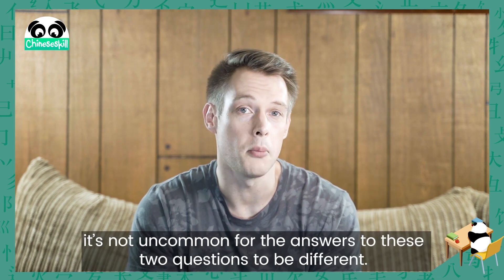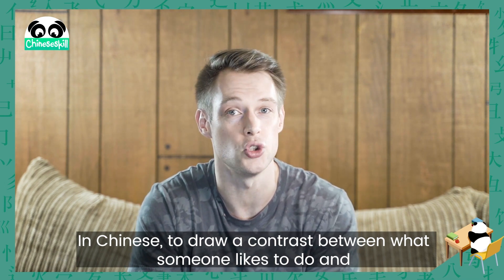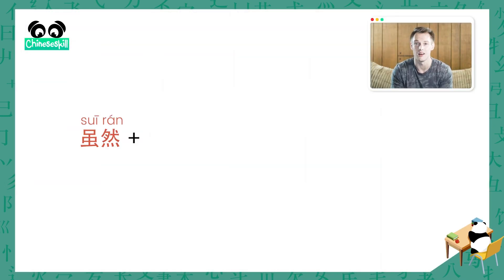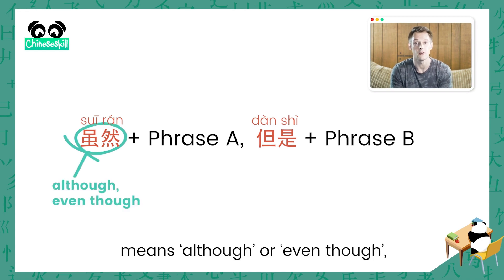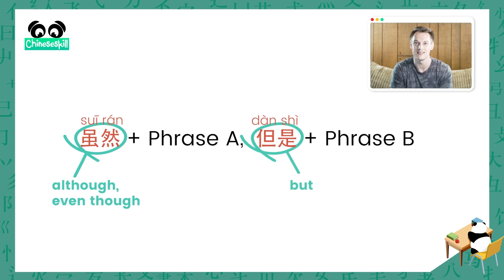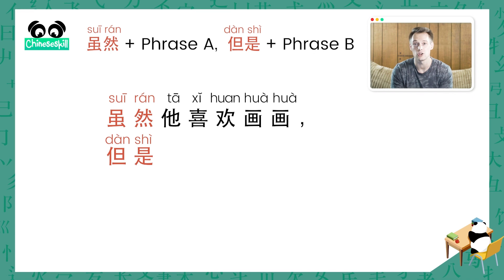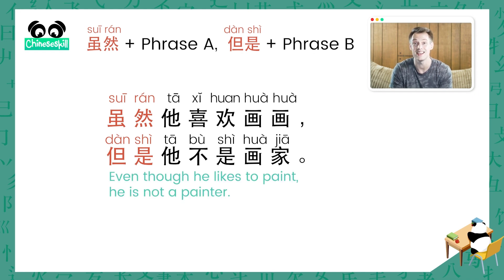For a lot of us, it's not uncommon for the answers to these two questions to be different. In Chinese, to draw a contrast between what someone likes to do and what someone does for work, we can use the following structure: 虽然 plus phrase A, followed by 但是 plus phrase B. 虽然 means although or even though, and 但是 means but. For example: 虽然他喜欢画画,但是他不是画家。 Even though he likes to paint, he is not a painter.